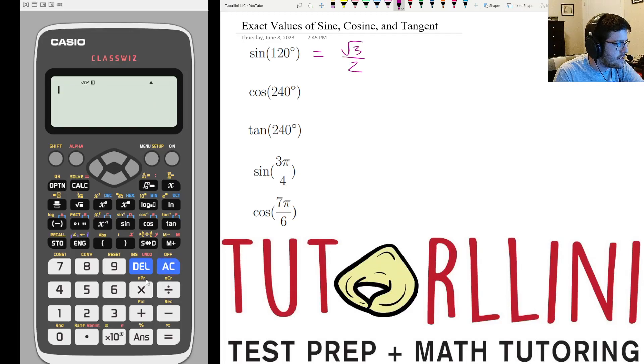All right, let's hit AC, clear, and we're going to do cosine of 240 now. We get negative 1 half. Let's do one more, tan of 240, one more in degrees. Great, so that gives us root 3.